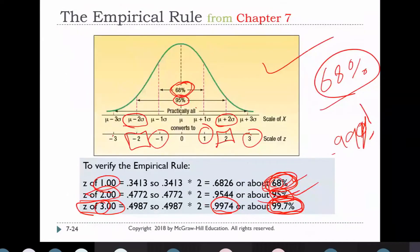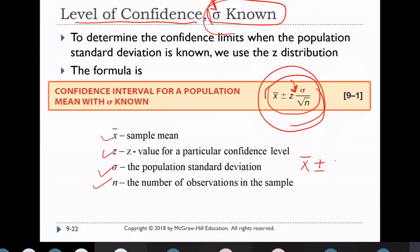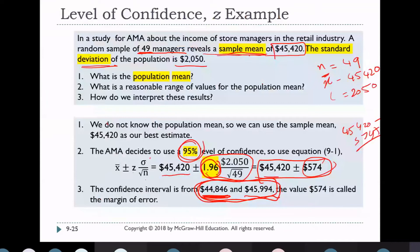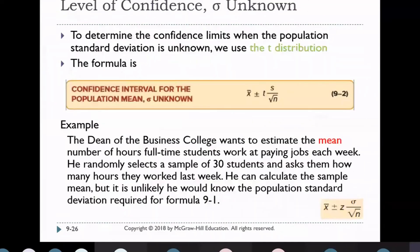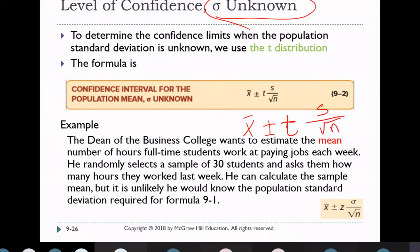In the case where sigma is unknown, instead of Z we use the T distribution. The formula becomes x̄ ± t · (s / √n), where s is the standard deviation of the sample and n is the sample size. We use T distribution in this case.